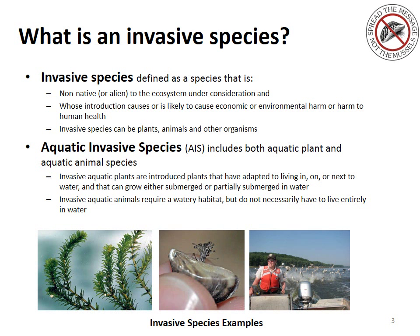An invasive species is defined as something that is non-native to that ecosystem. Once it's introduced, it causes or is likely to cause economic or environmental harm. Invasive species can be plants, animals, and other types of organisms. The AAIS program for Kansas City includes both aquatic plant and animal species and preventing the spread to our watersheds.